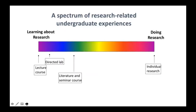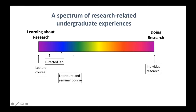In my talk today, I'm going to be describing curriculum that falls into different places on this spectrum from learning about research to doing research. On the learning-about-research end would be a typical lecture course, then labs that can go along with those that are directed — step-by-step experiments written out for the students. Then a literature or seminar course, while the other end of the spectrum is having an individual research project.